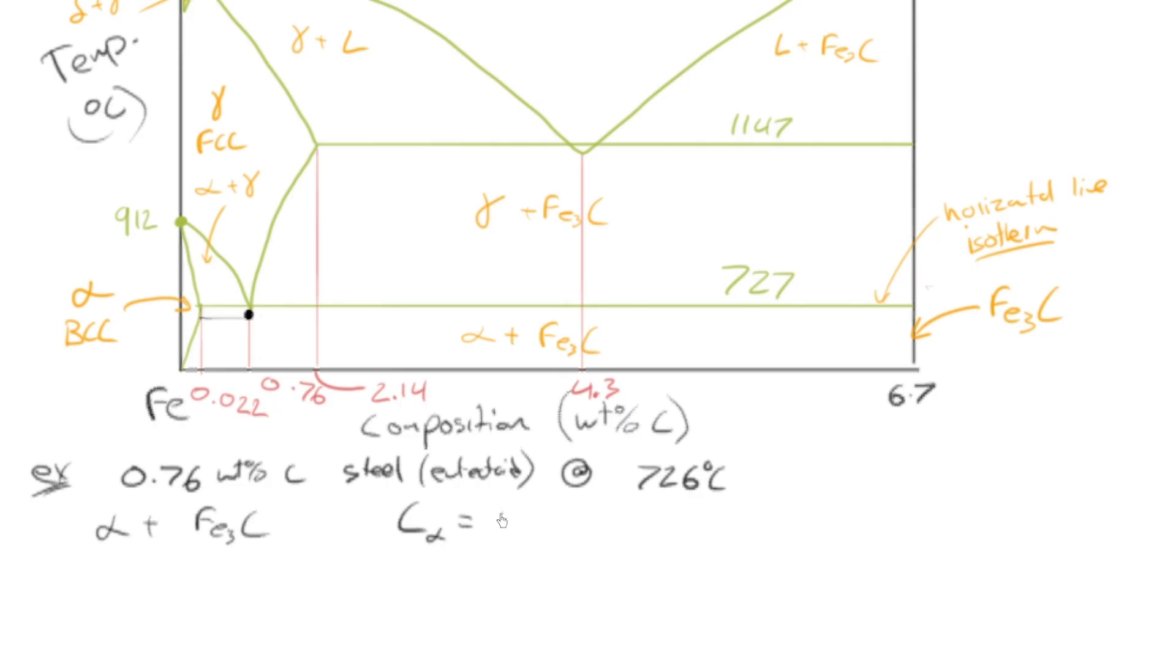And if we're just below 727, it's essentially exactly the same as 0.022. So it's 0.022. Rightmost boundary hits Fe3C. So the composition of Fe3C is 6.7. Incidentally, the composition of Fe3C is always 6.7 because it's a compound. And that's the stoichiometry.